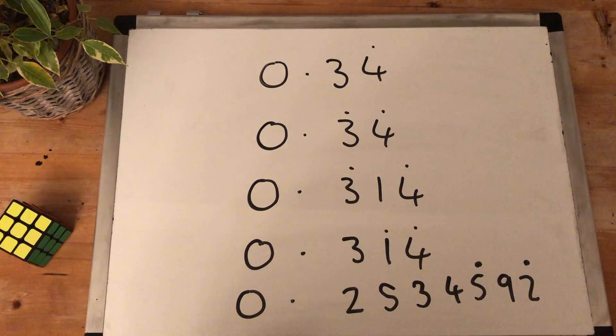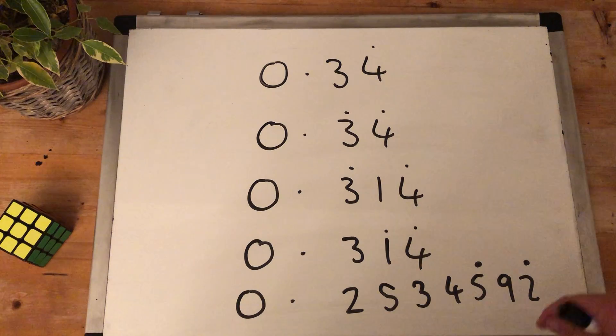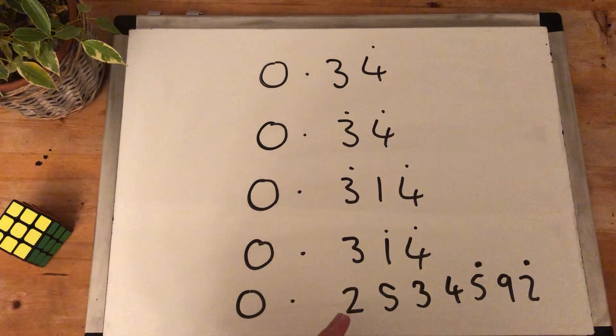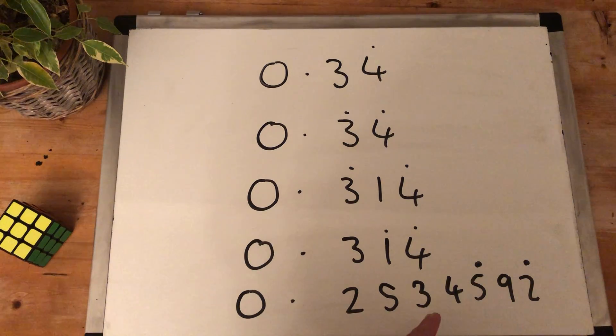Finally, 0.2534592, where the only thing recurring are the things with recurring symbols above it or things that are sandwiched between recurring symbols. So this one here would be 0.2534592, 0.592, 0.592, 0.592 forever.